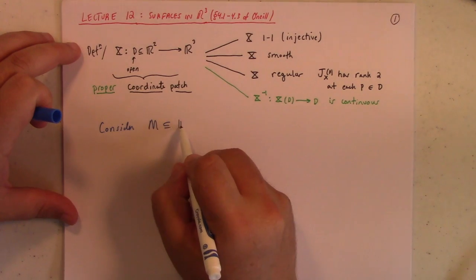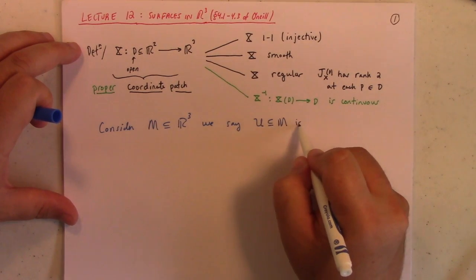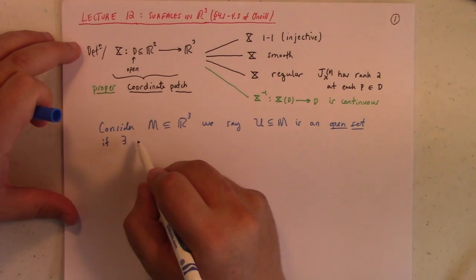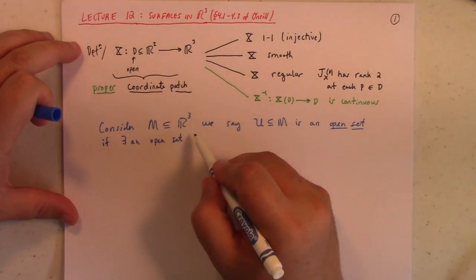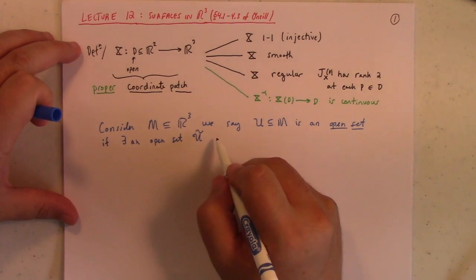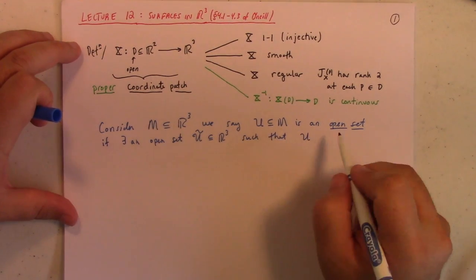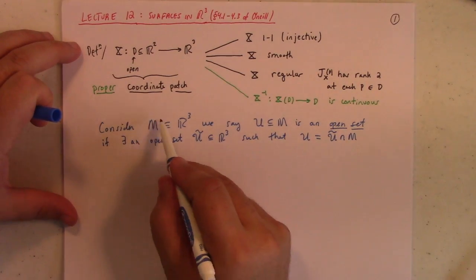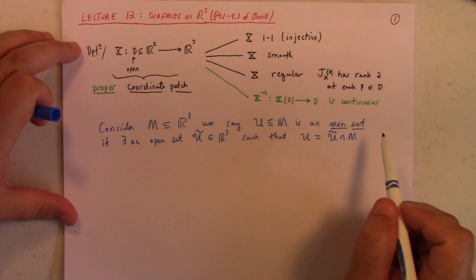So consider M, which is just going to be some subset of R3. We say U, a subset of M, is an open set if there exists an open set, I'll call it U tilde, in R3, such that U is equal to U tilde intersect M. So, in other words, I'm giving this subset of R3 what's called the subspace topology. You get open sets in M simply by intersecting open sets in R3 with M itself.